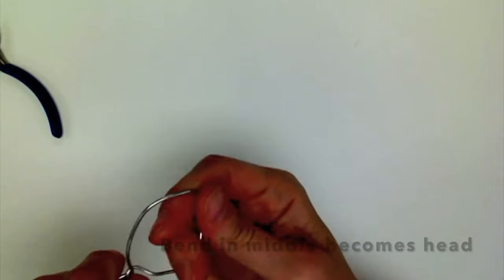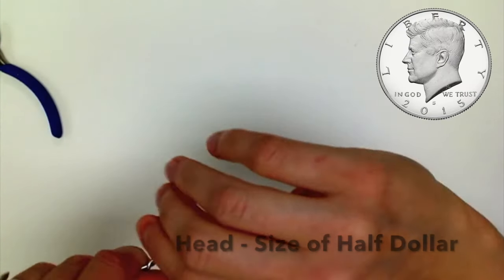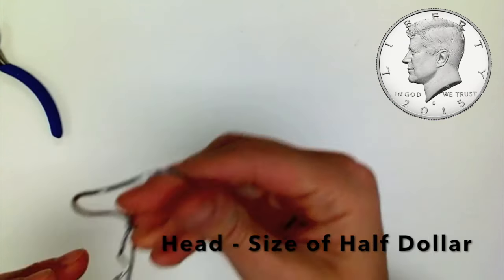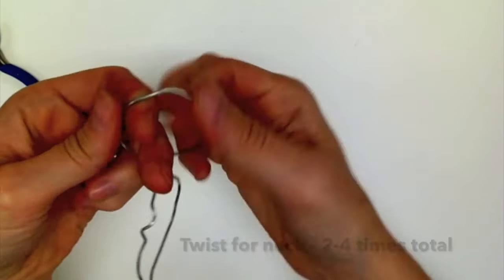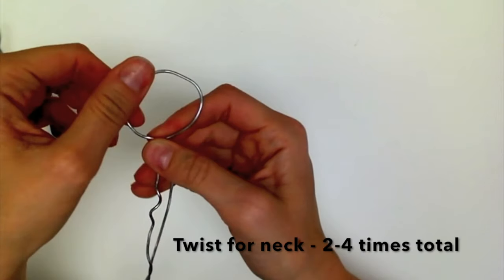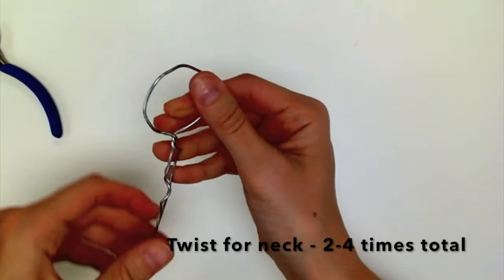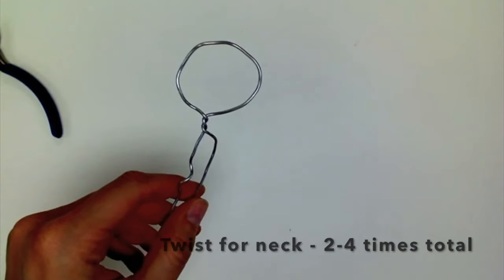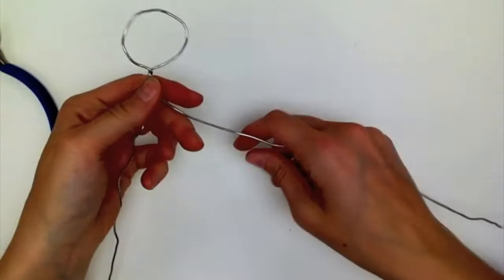The head should be about the size of a half dollar, and you want to twist the neck two to four times total, no more. Once you're satisfied with the neck, take one of the ends.